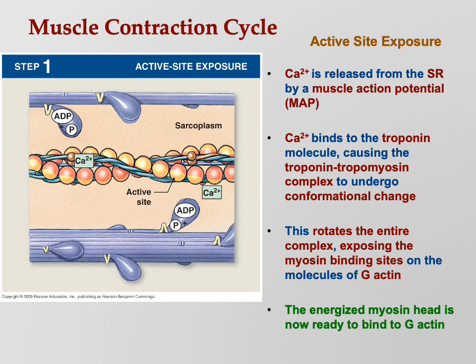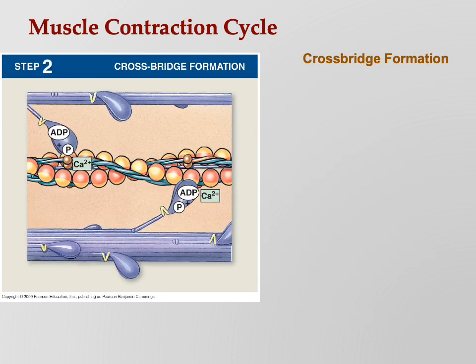Step three: we form the cross bridge. Notice in the bottom right of the illustration the myosin head has now grabbed a hold of the actin. The thick filament is connected to the thin filament by a bridge - we call that a cross bridge. Cross-bridge formation: the myosin head grabs the actin and bridges the thick and thin filaments together.